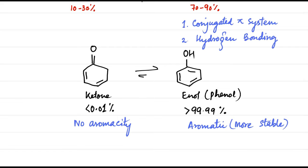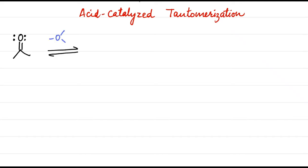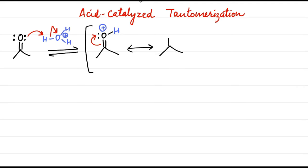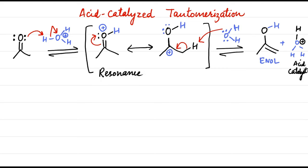This keto-enol tautomerization is catalyzed by trace amounts of either acid or base. In the acid-catalyzed tautomerization, the carbonyl group is protonated at the electron-rich oxygen to form an oxonium-type ion. This is quickly stabilized by the weak carbonyl pi bond to form a cation intermediate. These two structures are resonance structures. The cation intermediate is then deprotonated at the alpha position to form an enol and regenerate the acid catalyst. Notice that all reagents and intermediates are either neutral or positively charged — the mechanism does not exhibit any negative charges, which is consistent with acidic conditions.